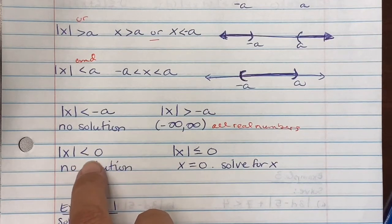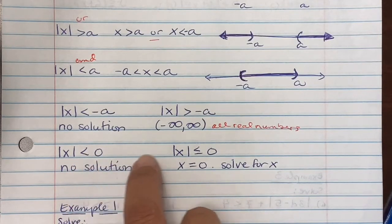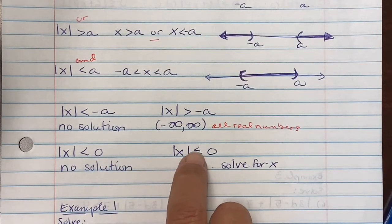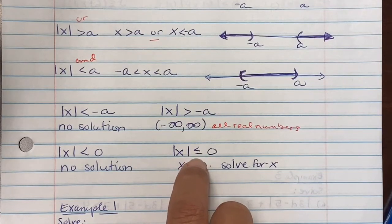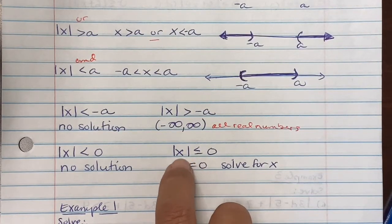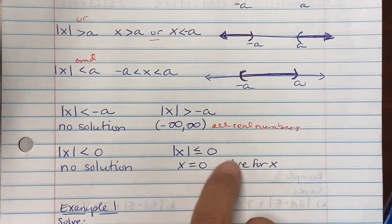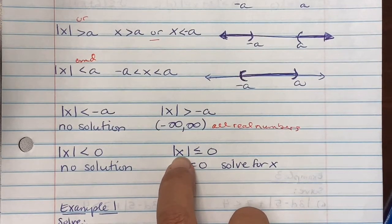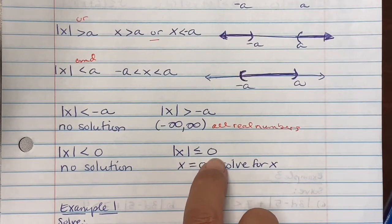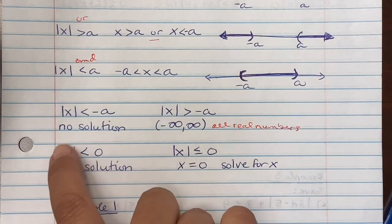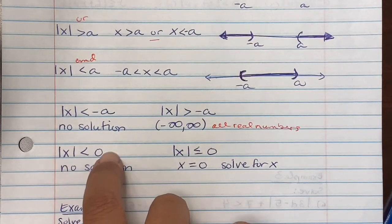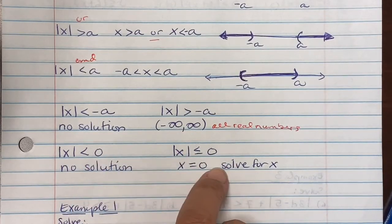Notice the difference: absolute value of x less than zero has no equal sign and gives no solution. But absolute value of x less than or equal to zero — when the equal sign is present — you take the inside and set it equal to zero and solve for x, giving x equals zero, since zero equals zero.